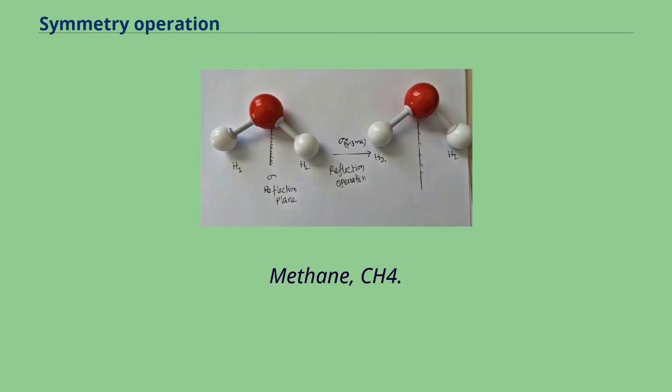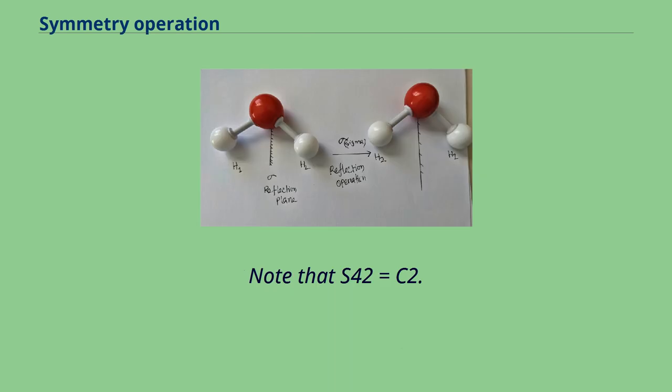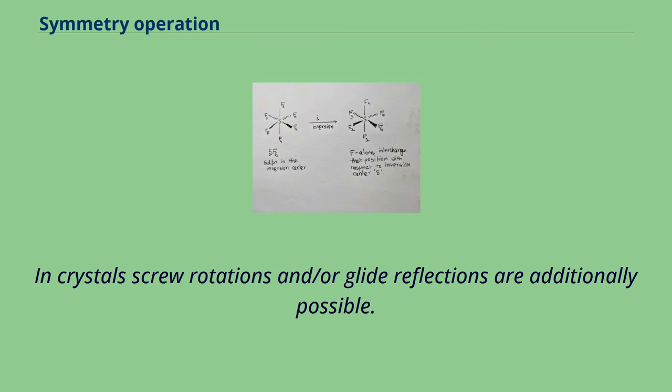Methane, CH4. In addition to the proper rotations of order 2 and 3 there are three mutually perpendicular S4 axes which pass halfway between the CH bonds and six mirror planes. Note that S4^2 equals C2. In crystal screw rotations and/or glide reflections are additionally possible.